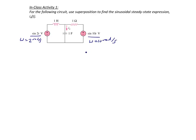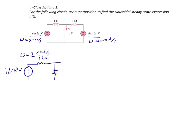We will draw the circuit twice: once with sine 2t on and once with sine 10t on. Because they have two different frequencies, the impedance will change for each. For the left circuit with omega equals 2 radians per second, the voltage source is 1 at an angle of negative 90 degrees volts. The inductor is J2 ohms, the capacitor is negative J/2 ohms with current Ix through it, and the 1 ohm resistor is present with the right voltage source shorted.